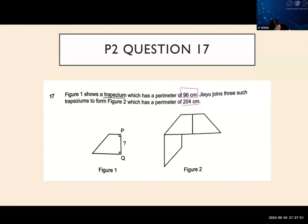So they tell you that the perimeter of the trapezium here is 96. Figure 2 includes three trapeziums, but you do not actually use the four sides of the trapezium. You notice that some of the sides are overlapping, so this will give you 204 cm. So far everybody okay? I'm going to move on to the explanation now.